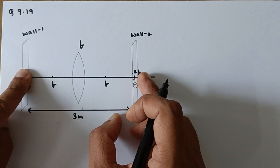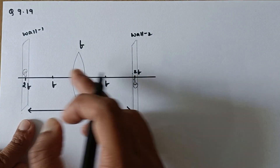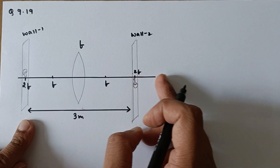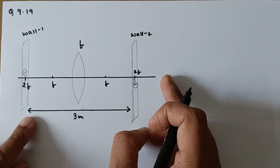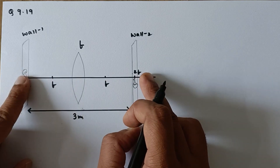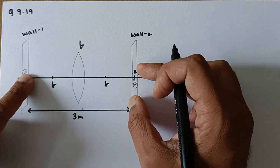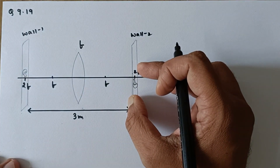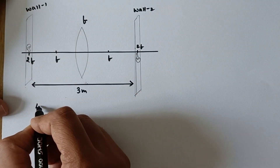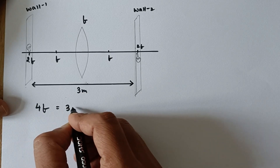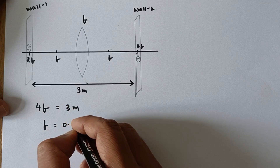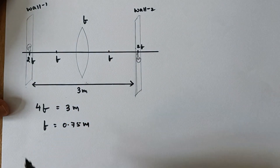4f is the minimum distance between the object and the image. If you even slightly displace the object, the image will comparatively move very far away, and the distance between the object and image will be more. So the minimum gap between the object and the image for a real image is 4f, which means 4f needs to be kept as 3 meters. So f would be 3 by 4, that is 0.75 meters.